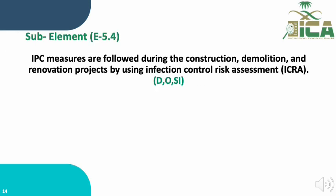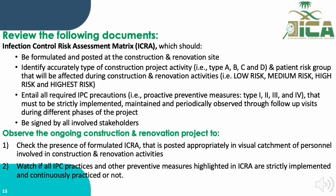Sub-element E.5.4 states that IPC measures are followed during construction, demolition, and renovation projects using the Infection Control Risk Assessment (ICRA). This sub-element requires document review, observation, and staff interview activities. Documents to review include the ICRA, which should specify the type of construction project activity, the patient risk level (low, medium, high, or highest), and the required IPC precautions for Type 1, 2, 3, or 4 based on matching the construction activity type with patient risk category. The ICRA must be signed by all involved stakeholders.